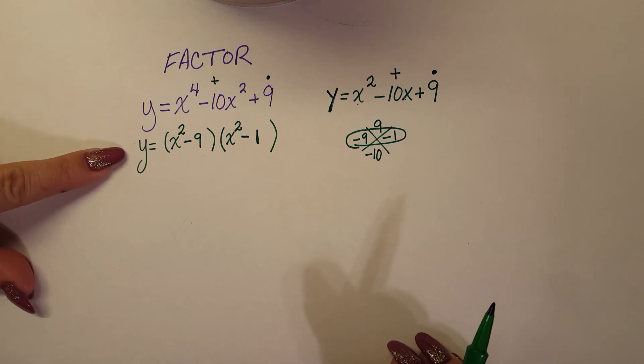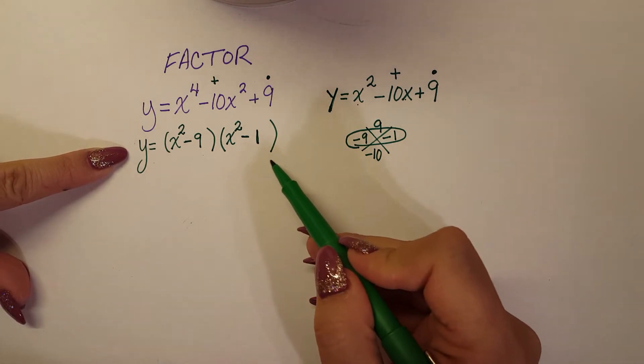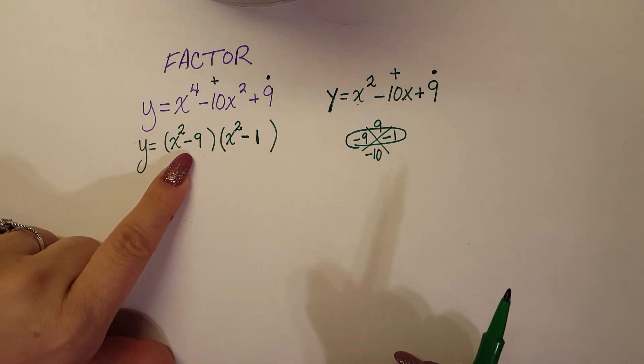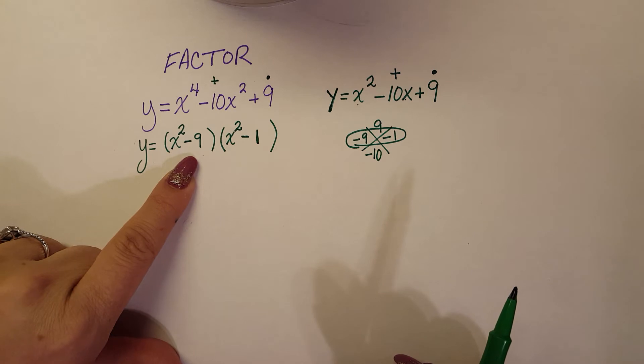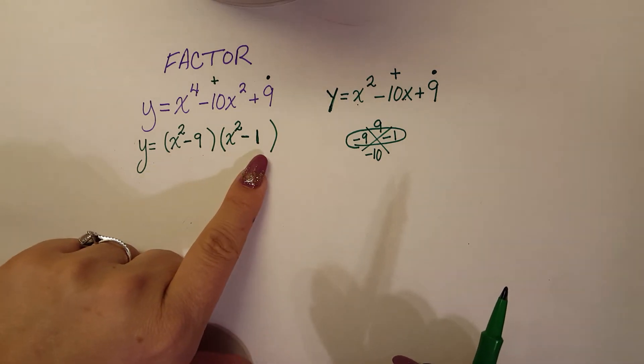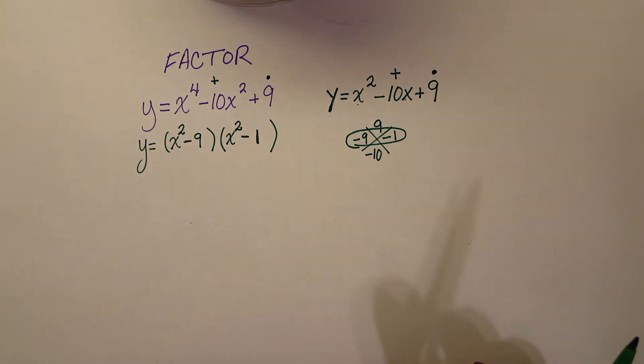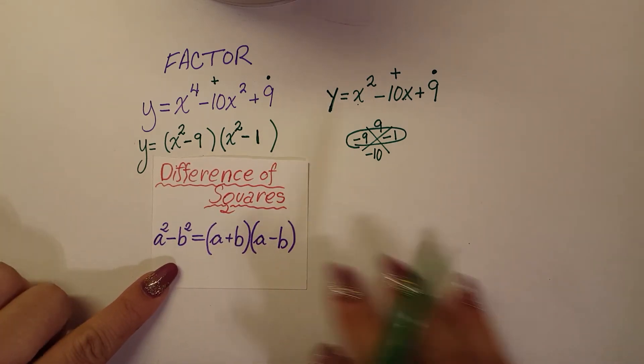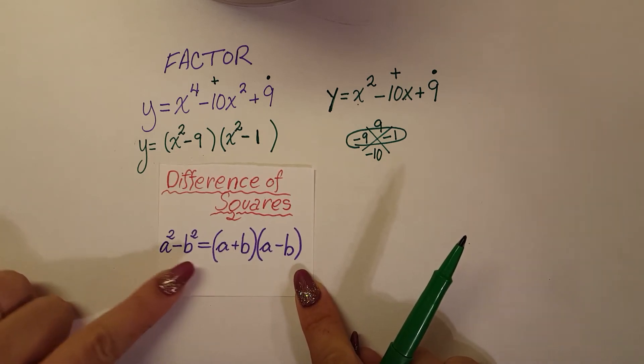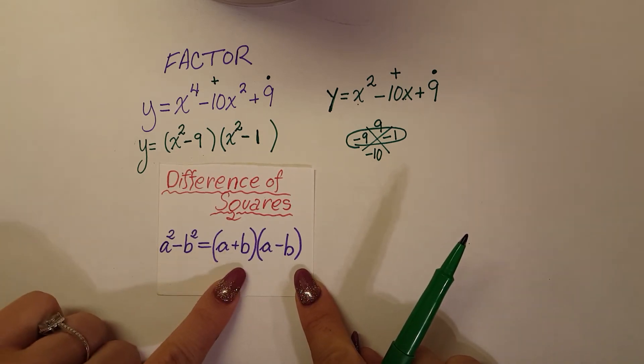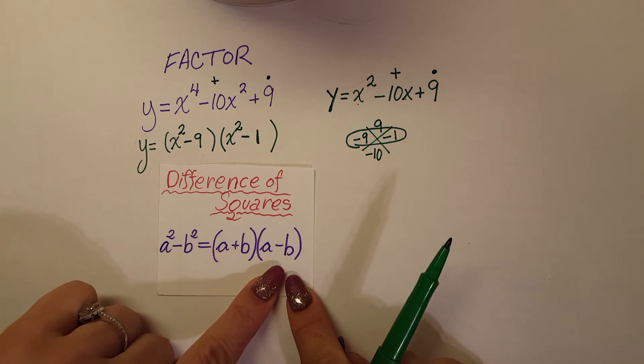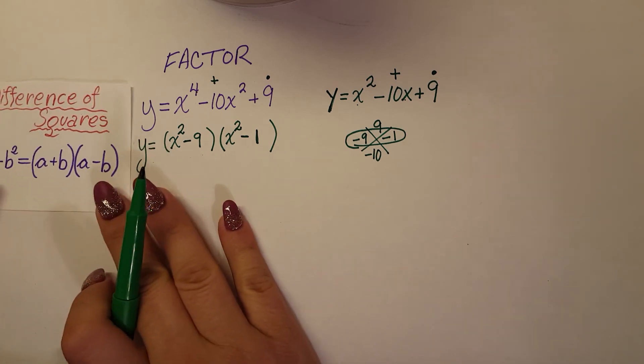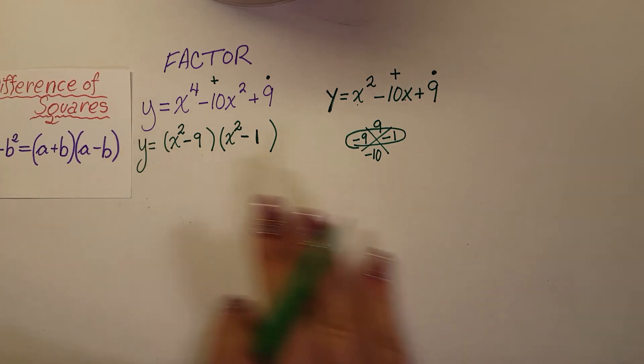Now, be careful when you're factoring, because when you're factoring, we want to go down to the most simplified. So over here, we recognize that we have a difference of squares. And we also have another difference of squares. So, bringing back our definition of what a difference of squares is, basically we have a squared minus b squared breaks down to a plus b, a minus b. So I'm going to put this off to the side as a reference.